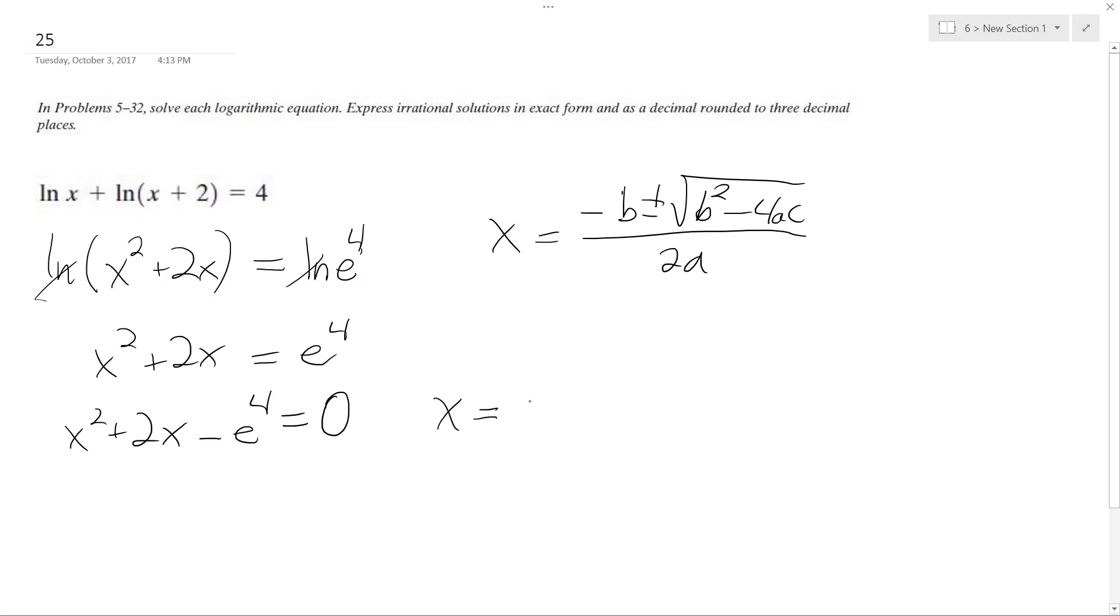x equals negative 2 plus or minus the square root of 4 plus 4 times e to the fourth, all over 2. And that's it.